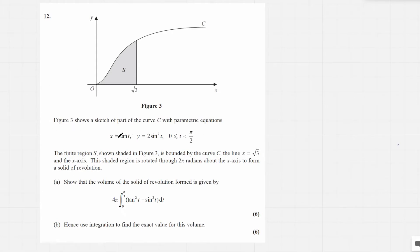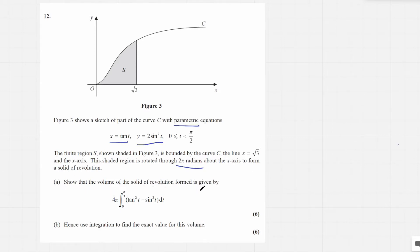Figure 3 shows a sketch of part of the curve C with parametric equations x equals tan t and y equals 2 sine squared t. The finite region S shown shaded in figure 3 is bounded by the curve C, the line x equals root 3 and the x-axis. This shaded region is rotated through 2 pi radians about the x-axis to form a solid of revolution. Show that the volume of the solid of revolution formed is given by this expression right here.